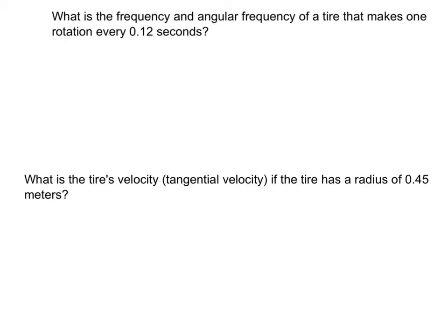A couple of quick example problems. The first one: what is the frequency and angular frequency of a tire that makes one rotation every 0.12 seconds? Note the unit and what it's saying — it's going to make one rotation in this amount of time. That's the definition of period. So we are given the period: 0.12 seconds.